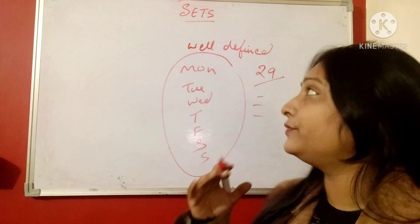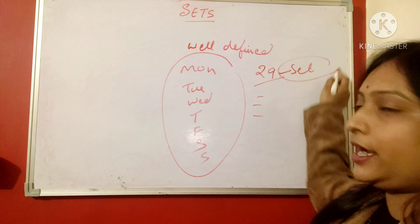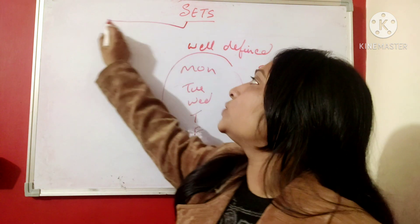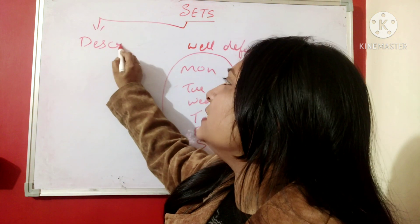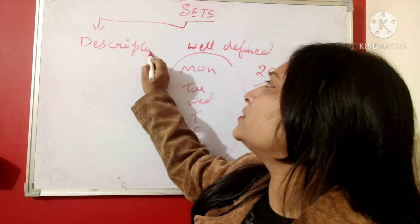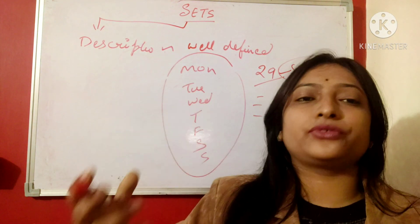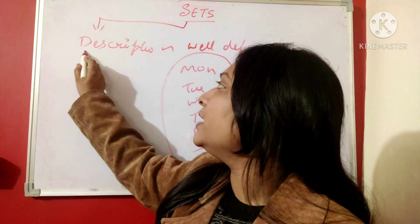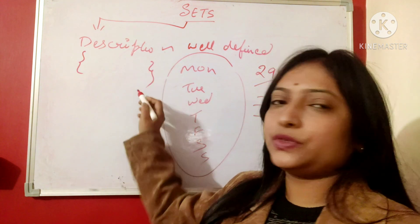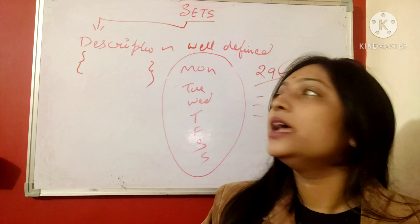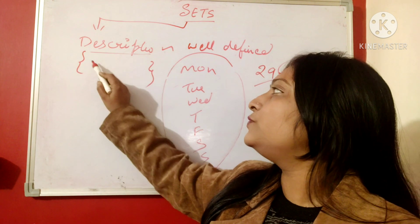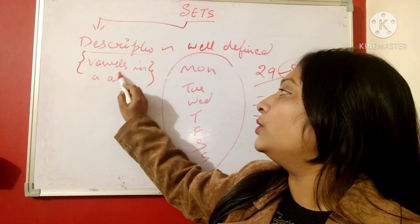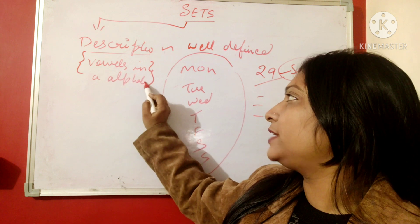Now let's look at the ways to represent a set. The first one is the description method. As the name indicates, description means to describe. Suppose I am talking about the vowels in the alphabet — we put curly braces, which are very important to represent any set. In the description method, we simply write: vowels in the alphabet. This is called the description form — using words to describe a set.